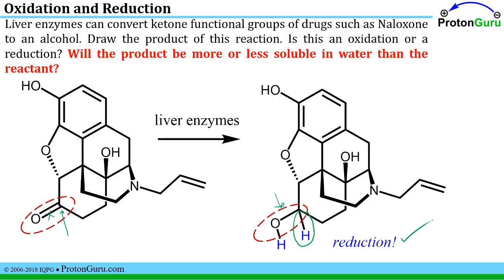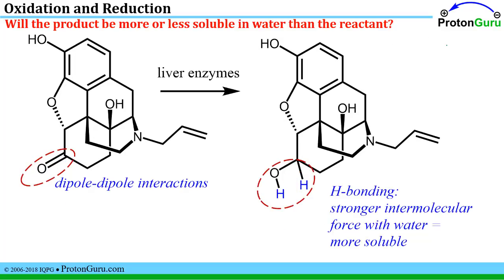The last part of this question asks whether the product will be more or less soluble in water than the reactant. The only thing that changed in this molecule is the ketone became an alcohol functional group. A ketone has a polar carbon-oxygen bond capable of dipole-dipole interactions, whereas the new OH group is capable of hydrogen bonding. Hydrogen bonding leads to stronger intermolecular forces with water, which makes the product more soluble in water than the starting material.